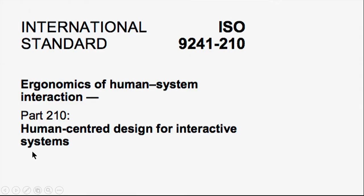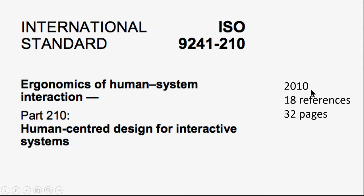Let me talk about the first of these two standards: ISO 9241 part 210, titled 'Ergonomics of Human-System Interaction: Human-Centered Design for Interactive Systems.' It was last updated in 2019, has 18 references and 32 pages. These indications are quite important — the number of references and pages is generally a good indication of content and sometimes quality. Documents that are somewhat longer tend to have more useful content, while very short ones are often just organizational or 'motherhood statements' that are difficult to apply.